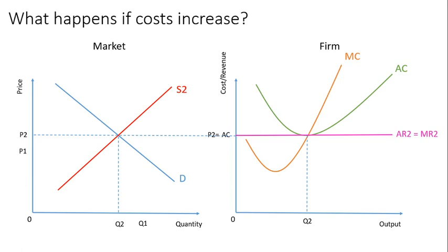The only thing you really need to know is to be able to say: if we're making profit, explain how that attracts more firms to the industry. As a result, the supply curve shifts right, price goes down, and we reach this new equilibrium.